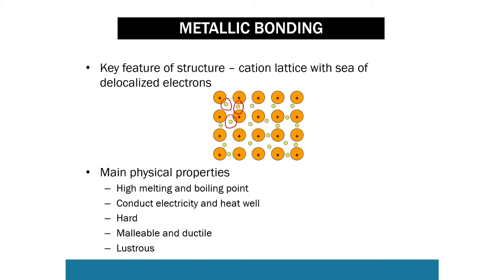The next property is that metals are good conductors of electricity and of heat. Metals can conduct electricity well because the free electrons in the sea of delocalised electrons are free to move around and conduct the electricity.